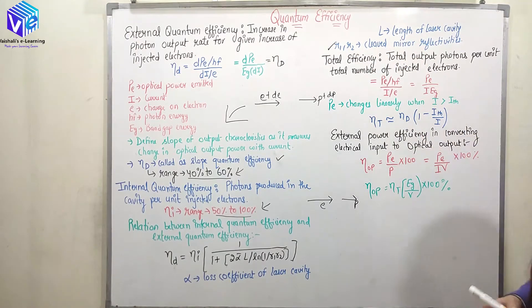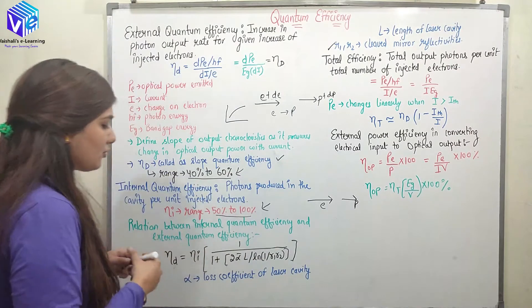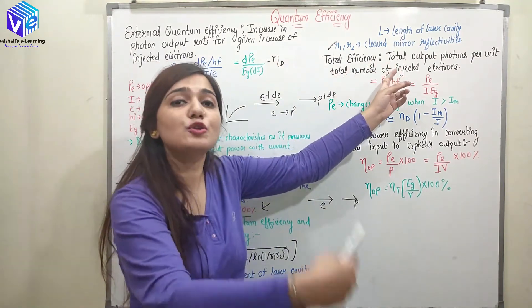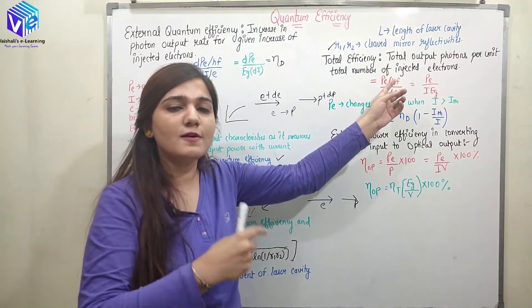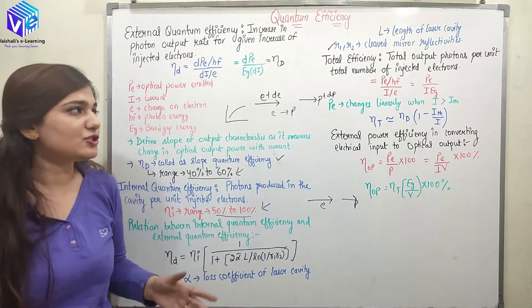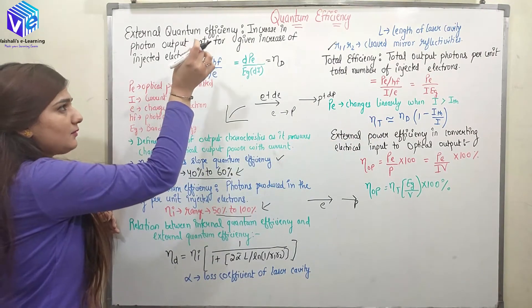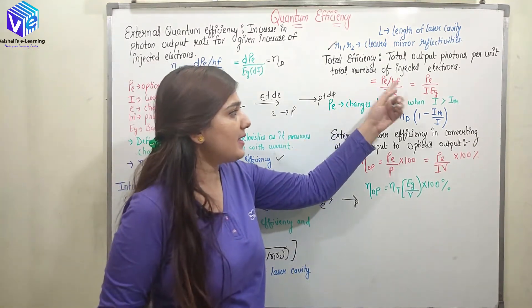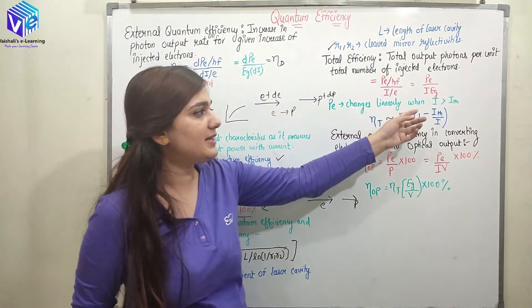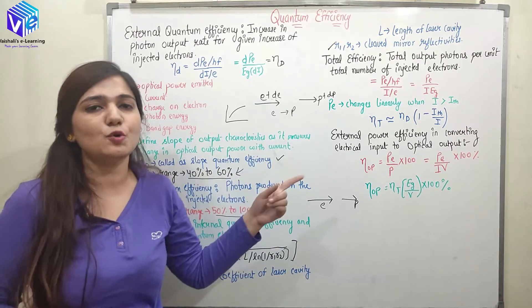Now coming to total efficiency. If we supply electrons and have some output photons after losses, we are generating photons inside the cavity but there will be some losses. The total efficiency gives the total output photons, including accounting for all photon losses. We have PE upon hf divided by I upon e, which gives dPE divided by the change in current — represented as PE upon hf divided by I by e, or PE upon I into EG. PE changes linearly when current is greater than the threshold current, allowing a relationship between external and total quantum efficiency.